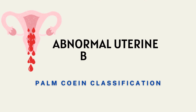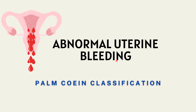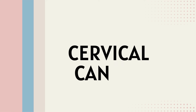Hello everyone. We continue our discussion on abnormal uterine bleeding, primarily discussing the causes under the PALM-COEIN classification. We have already discussed polyps, adenomyosis, leiomyoma or uterine fibroids, and have begun our discussion on gynecologic malignancies. We have already covered endometrial cancer, its staging, treatment, etc. Please watch the previous videos for better understanding. Today's topic is cervical cancer.